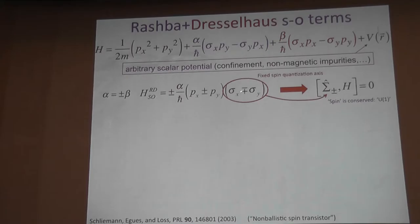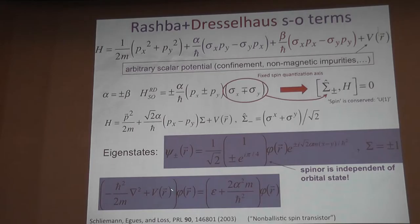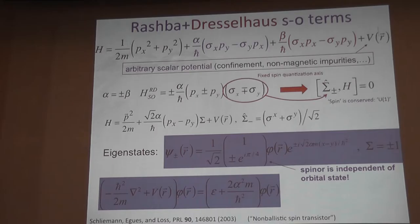If I write down the Hamiltonian, I can immediately solve it formally. An interesting feature is that the spinor is K-independent. The spinor is immune to scattering to lowest order because this Hamiltonian is linear in K. Of course, if you include cubic terms, the spinor would decay - people have done this extensively. You can also rotate this Hamiltonian to write it in terms of an effective field along the y direction when alpha equals beta, giving a unidirectional effective field.